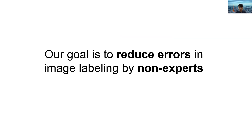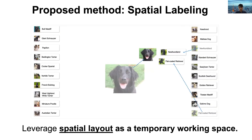In this study, our goal is to reduce error rate in image labeling by non-experts. We designed an image labeling interface we call Spatial Labeling. In this interface, we propose to leverage spatial layout as a temporary working space for screening annotation.